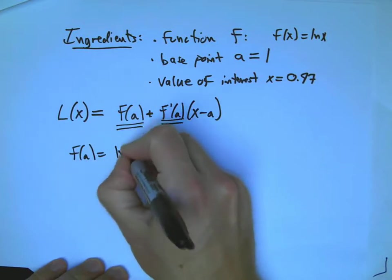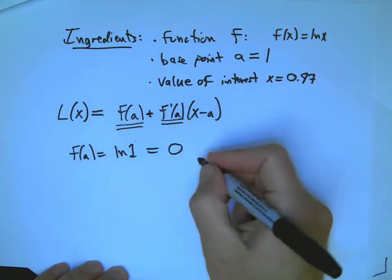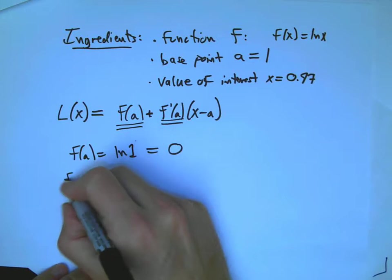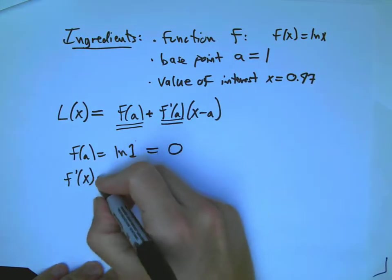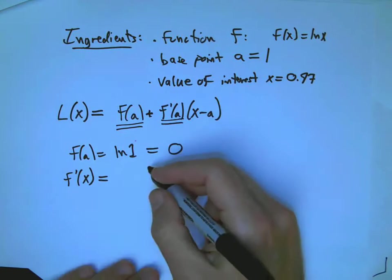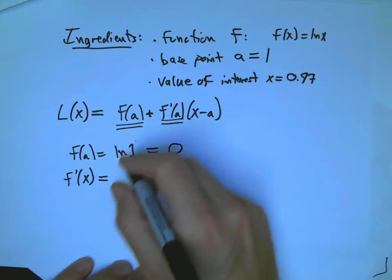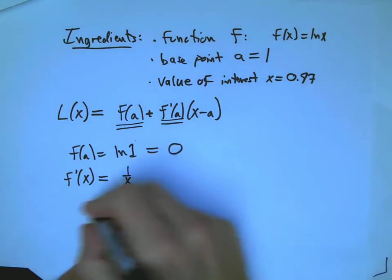So, f of a, here is ln of 1, which is 0. And f prime, we don't just directly leap to f prime of a, because we need f prime of x first. F prime of x is the derivative of ln x, that's 1 over x.